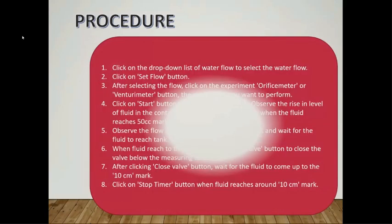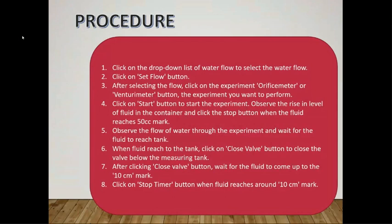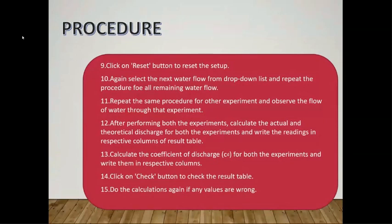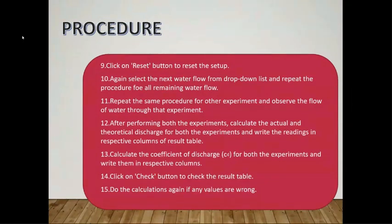After clicking 'Close Valve', wait for the fluid to come up to the 10 centimeter mark. Click 'Stop Timer' when the fluid reaches around 10 centimeters, then click 'Reset' to reset the setup. Select the next water flow from the drop-down list and repeat the procedure for all remaining water flow values. After performing both experiments, calculate the actual and theoretical discharge, write the readings in the result table, calculate the coefficient of discharge for both experiments, and click 'Check' to verify the result table.